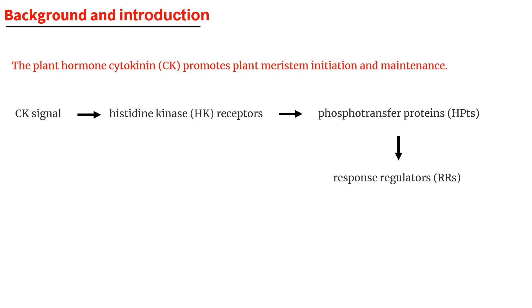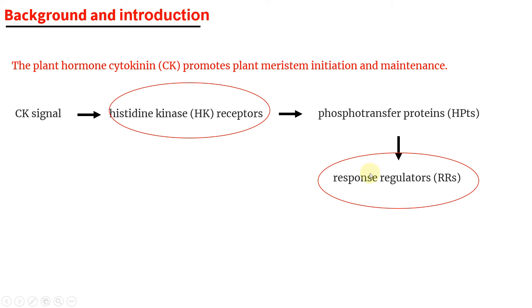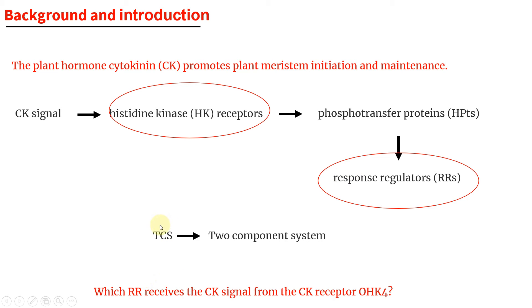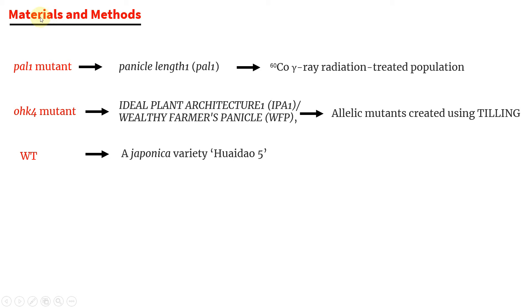Because cytokinin signaling is important from the histidine kinase receptor, you can highlight important things using these highlighters and show how they respond to different regulators. Here I have tried to explain how the two-component system — the histidine kinase receptor and the response regulator — coordinate and control cytokinin signaling, using only 15 to 20 words. It is always good to connect the previous story with the next question, for example: 'Which response regulator receives cytokinin signals from the cytokinin receptor OsHK4?'